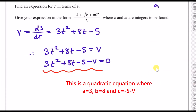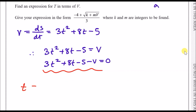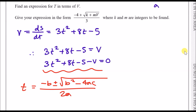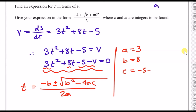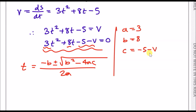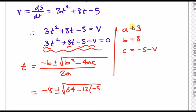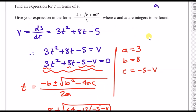To solve this quadratic in T, we use the quadratic formula: T = (−B ± √(B² − 4AC)) / 2A. Here A = 3, B = 8, and C = −5 − V. Substituting: T = (−8 ± √(64 − 12(−5 − V))) / 6. Inside the square root, expanding: 64 − 12 × (−5 − V) = 64 + 60 + 12V.